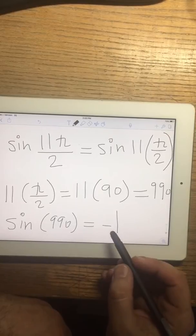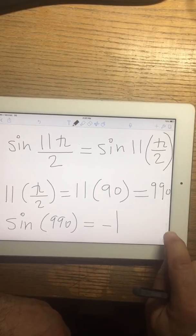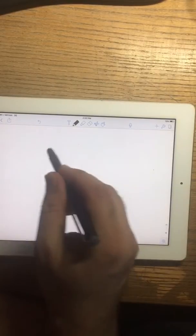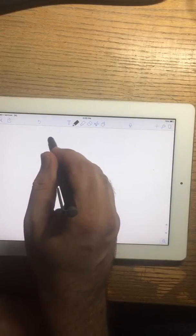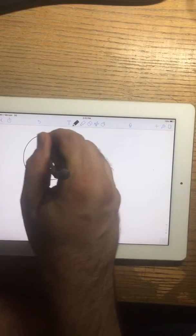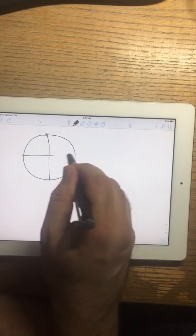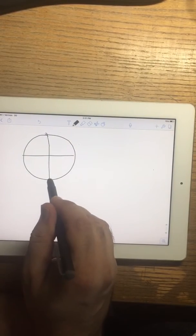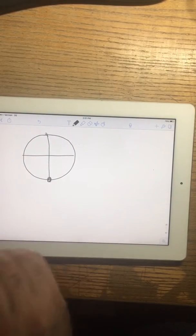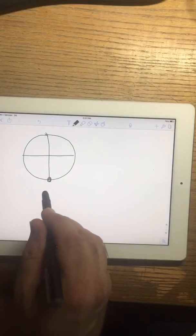Now let's see why we got negative 1. The reason is 990, if you calculate it on the unit circle, that happens to be down here, which is where sine is equal to negative 1.